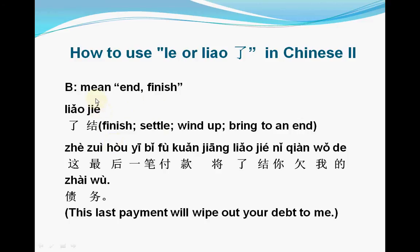了 as a verb — the second meaning is 'end' or 'finish'. For example, 了结 (liǎojié): 了 means 'finish', 结 also means 'finish'. Example sentence: 这最后一笔付款将了结你欠我的债务. 这 means 'this', 最后 means 'last', 一笔 means 'one/a', 付款 means 'payment', 将 means 'will', 了结 means 'finish or wipe out', 你 means 'you', 欠 means 'owe', 我的 means 'my', 债务 means 'debt'.